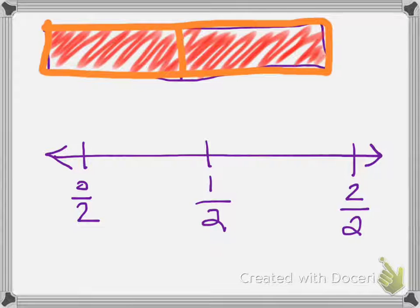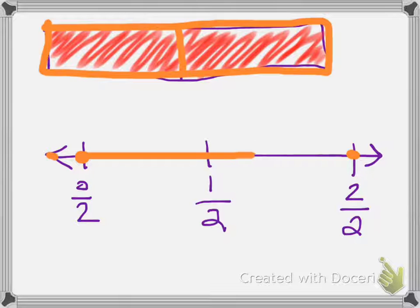Down below, you'll see on my number line, I have already created it, and then I have one whole is represented with the amount between the orange line starting and ending.